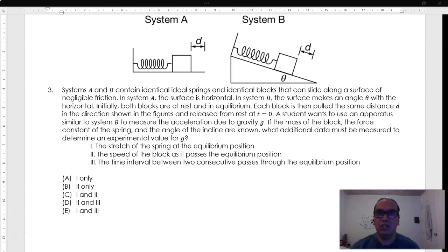Systems A and B contain identical ideal springs and identical blocks that can slide along a surface of negligible friction. In system A, the surface is horizontal. In system B, the surface makes an angle theta with the horizontal.